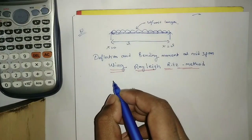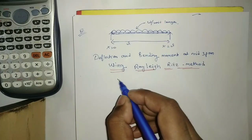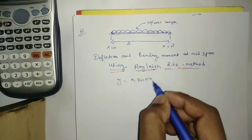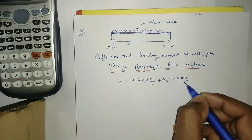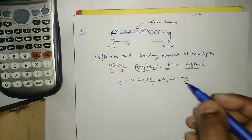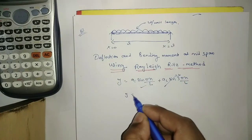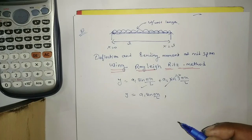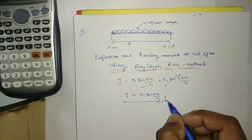Now, we will apply the Rayleigh-Ritz Method. First, we will define the trial function. The approximate trial function y is given as: y = a1·sin(πx/L), and a second term y = a2·sin(3πx/L). We call this the approximate trial function.